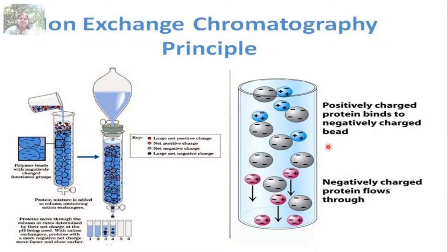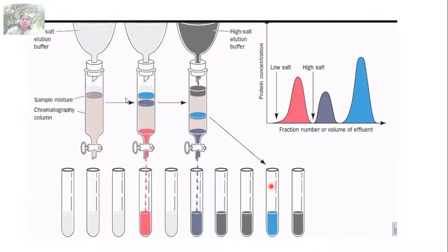Two types of ion exchange columns can be employed: a cation exchanger exchanges cations, and an anion exchanger exchanges anions, with counter ions having different charges. Depending upon the charges, you collect different fractions from the ion exchange chromatography and check for the purified protein you want to isolate.